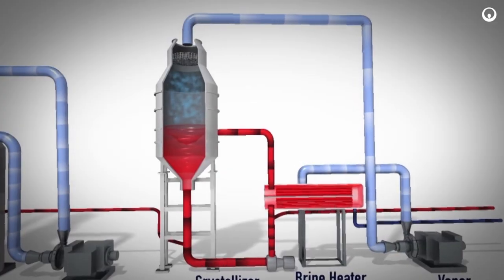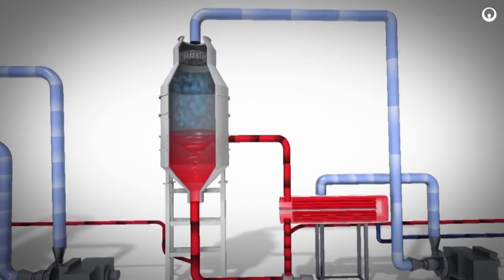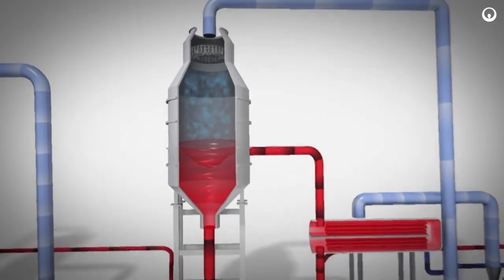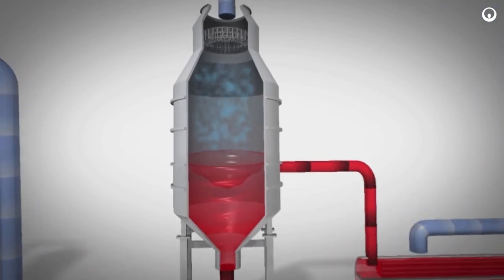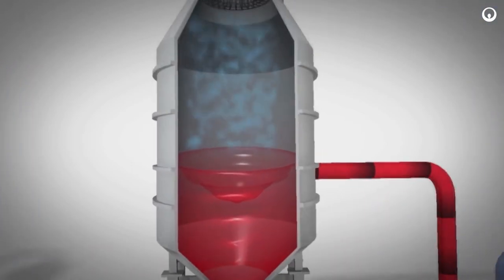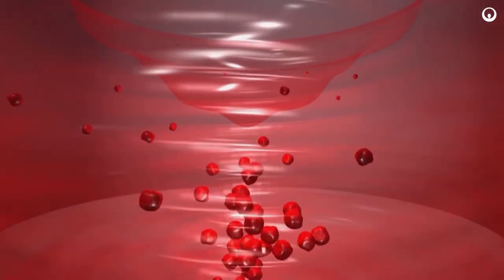Upon entering the vapor body, the heated brine flashes. When the brine flashes, water evaporates from the brine as steam vapor. This concentrates the brine and crystals form in the circulating brine.